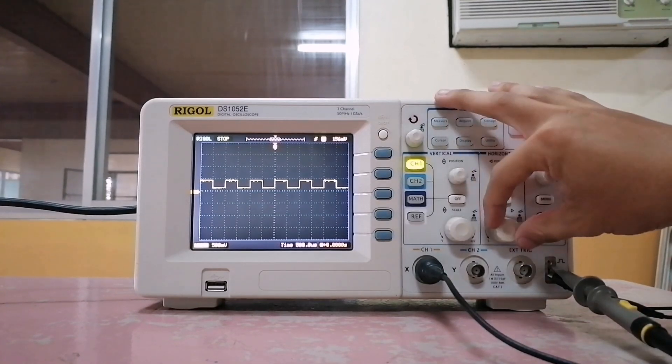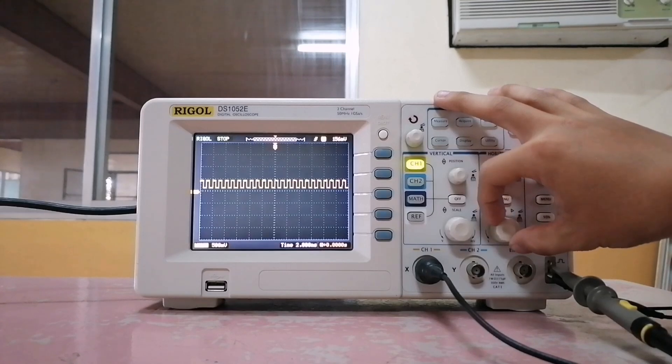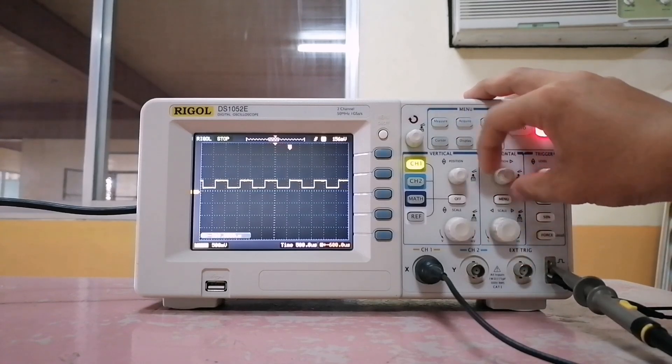I am at time division of 500 microseconds. To change the time division, turn this knob. To move your signal, turn this knob.